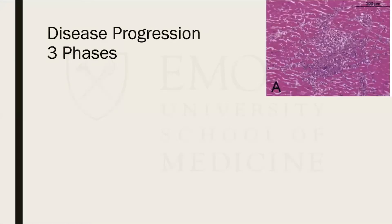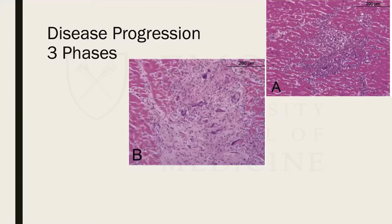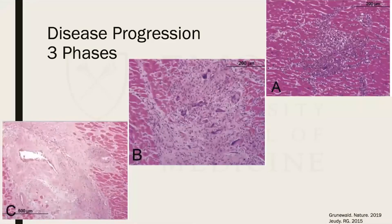Sarcoidosis comes in three phases. The first, or acute phase, is predominantly cellular — small granulomatous disease with lots of giant cells and hypercellular inflammation. The intermediate phase still has inflammation but you start to develop fibrosis, scarring, and granuloma formation. In the late phase, you see predominantly fibrosis with minimal cellularity and granulomas.